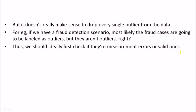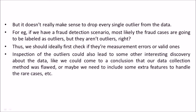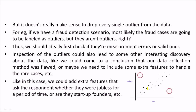We should ideally first check if the outliers are measurement errors or valid ones. Inspection of these outliers could also lead to interesting discoveries about the data — such as that our data collection method was flawed, or that we need to include extra features to handle rare cases. For example, in the age-salary data, we could add a feature asking whether the respondent was jobless for a period of time, or whether they are a startup founder. This kind of outlier can help in data discovery and in refining the problem statement.